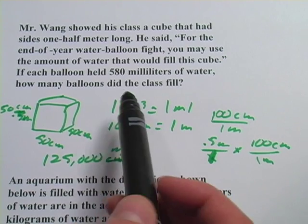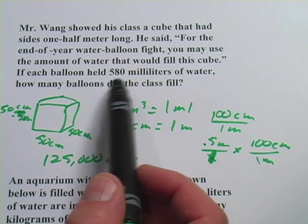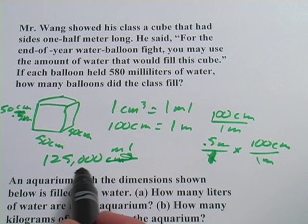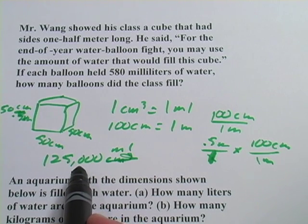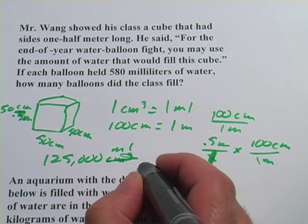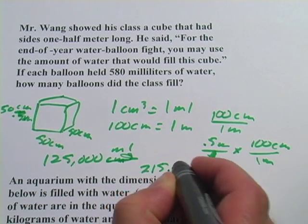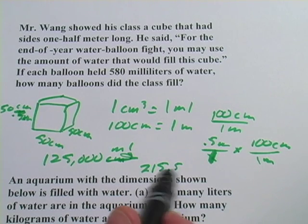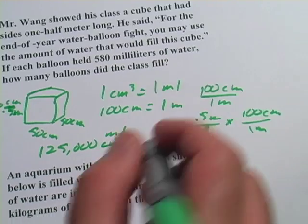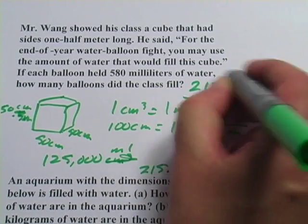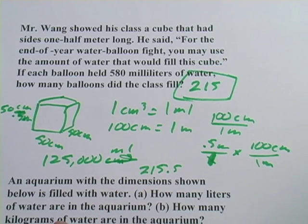The next part of the question says, how many balloons that hold 580 milliliters can you fill with this? So what we want to do is divide this by 580 and see what we get. And when I do that on my calculator, I get 215.5. So you could fill 215 and a half. We won't count the half and we'll just say 215 balloons. That sounds like enough balloons for a pretty fun water fight.